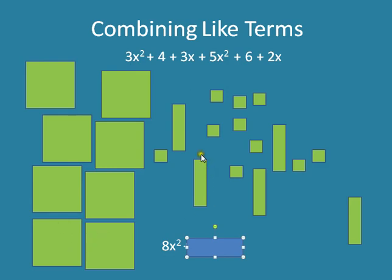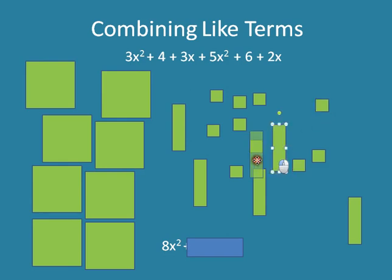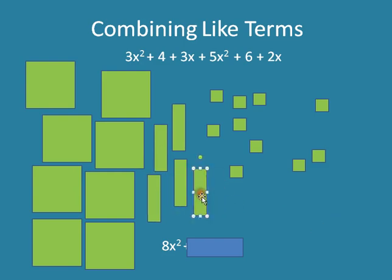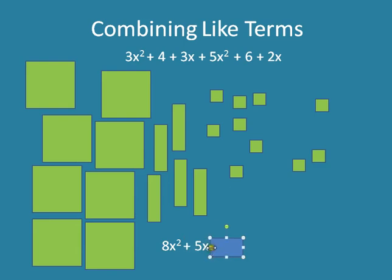Next we're going to look at just the x's, so I'll put all my x blocks together. I have 3x and 2x, and that's 1, 2, 3, 4, 5. So I have my 8 x squareds and my 5 x's.